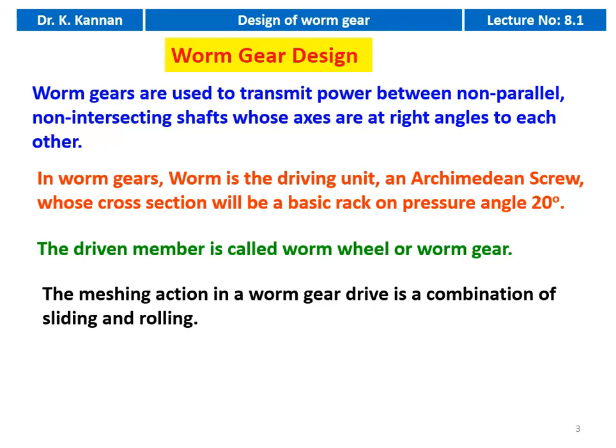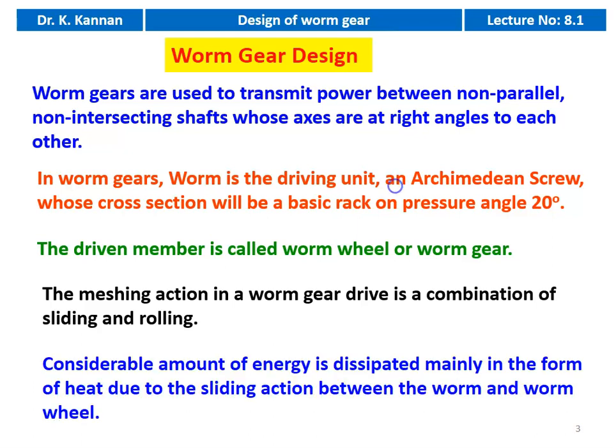The machine action in the worm gear drive is a combination of sliding and rolling, whereas in other gears it is just a rolling action. That is why in the worm gear there is an enormous amount of heat generated and the heat must be removed. Because of the sliding action, the wear on the worm gear is also high.